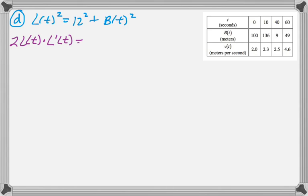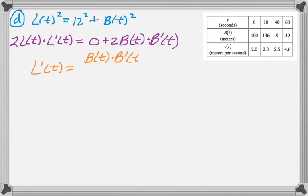And then the derivative of B squared is 2B(t) times B'(t). And then I'll rearrange that a little bit to get L'(t) equals B(t) times B'(t) over L(t).